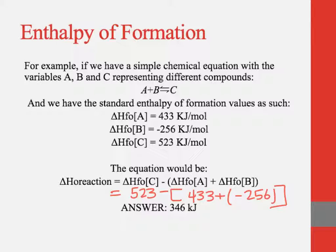So the equation following the rule, the delta H of the reaction is equal to the sum of the products minus the sum of the reactants. So what we would be doing here is C, which is 523 minus, and then A plus B, 433 plus a negative 256. And then when we do the math, we get 346 kilojoules.